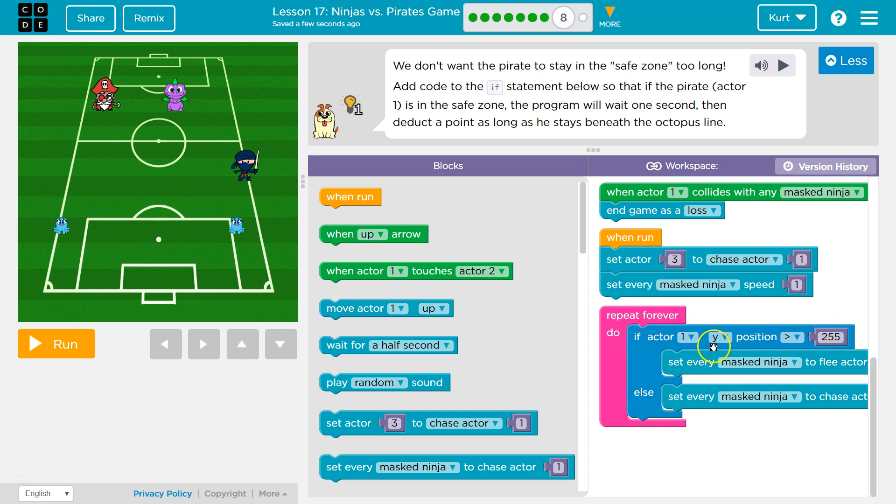It's the actor, actor 1 or the pirate's Y is greater than 255. Then that pirate is in the safe zone.